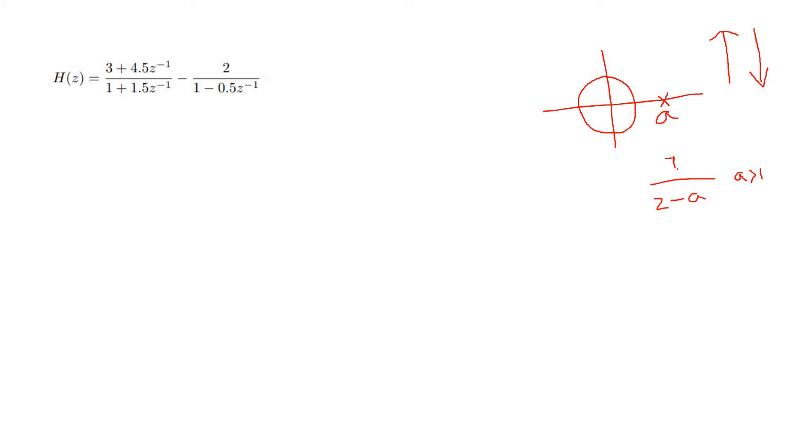So what we will do, we will place Z minus A in the numerator. That is, we will place a zero at the same location. So if we place one zero here, the effect of pole will be nullified by the effect of zero. As a result, the overall system will become a stable system. So this is the concept of pole-zero cancellation, and this is how we can make an unstable system stable.